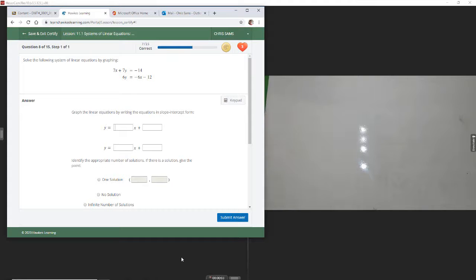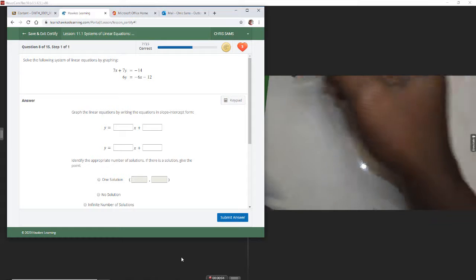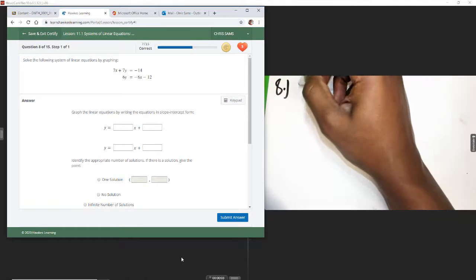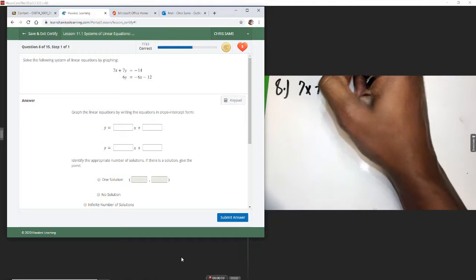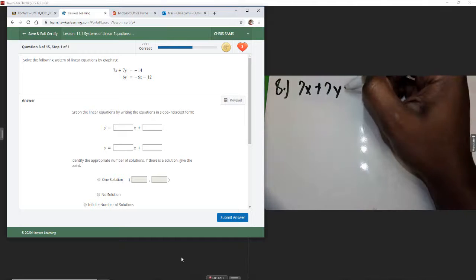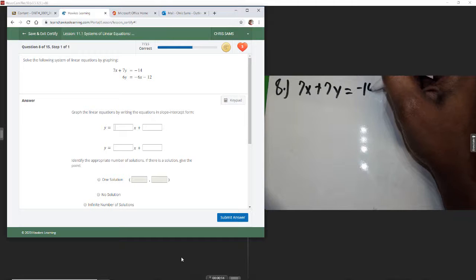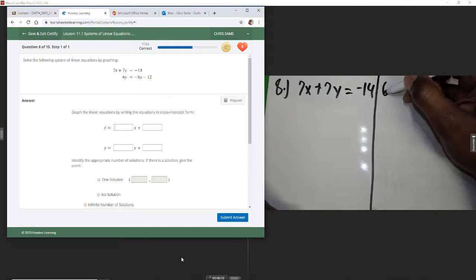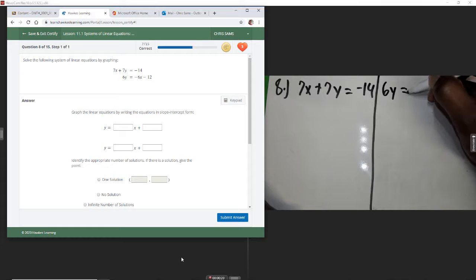Okay, number 8, we're going to solve and graph. We have 7x plus 7y equals negative 14. And the second equation, 6y equals negative 6x minus 12.